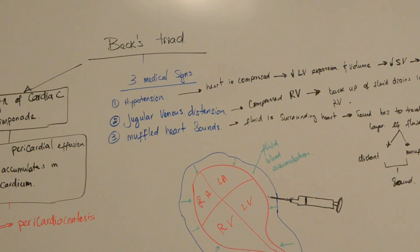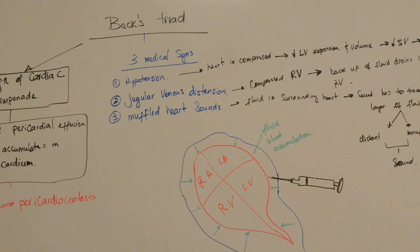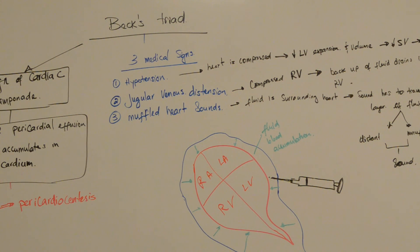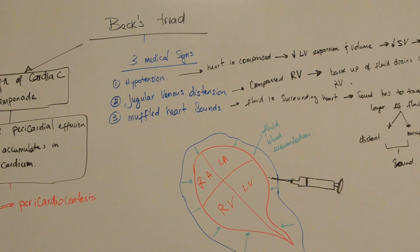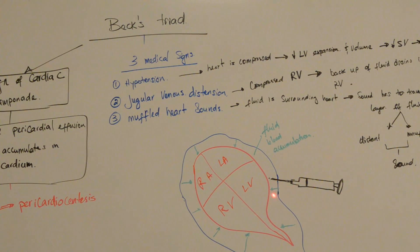The third sign is the muffled, distant muffled heart sounds. Why do we hear distant muffled heart sounds in cardiac tamponade, one of Beck's triad? It's because those fluids, the fluids that are filling like blood and other fluids that are filling the pericardial sac here that's surrounding the heart, because the heart sounds would have to travel through these layers of fluids here.